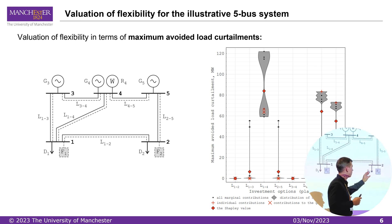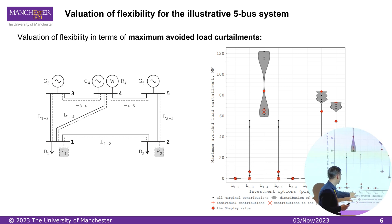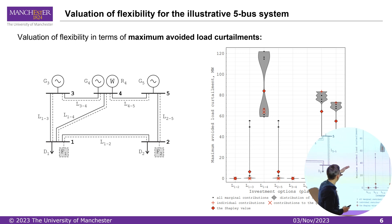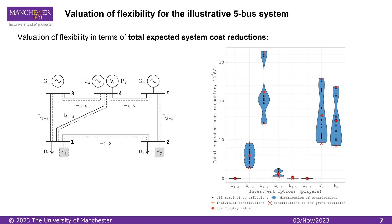The results are shown using violin plots, which display the distribution of contributions by different investments. You can see investment options — lines and flexibility providers — along with their contributions to avoided load curtailment. We can see the range and density of possible contributions. Flexibility providers are quite useful in this case, and line 1-4 is also very useful. Repeating the simulations for system cost reduction gives a quite similar picture — line 1-4 is again the best option, with the highest synergistic capability. This line should be recommended for the system planner to be prioritized.